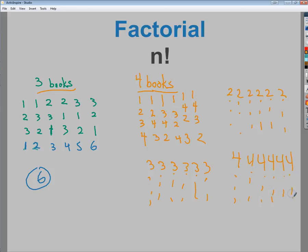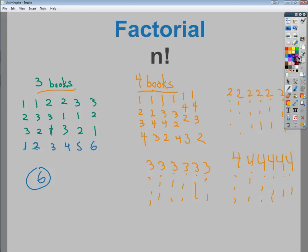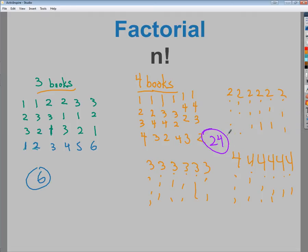So in this case, you could have a total of 24 different possibilities. Now, from here, it gets into the idea of, well, what if I have five books? How many possibilities do I have then? Because then I'm going to get sort of OCD about it, and I might spend way too much time doing this.